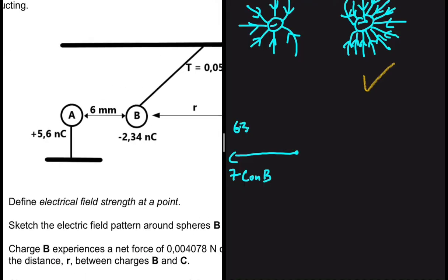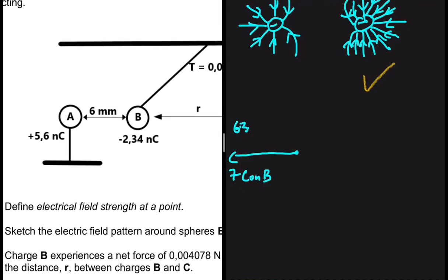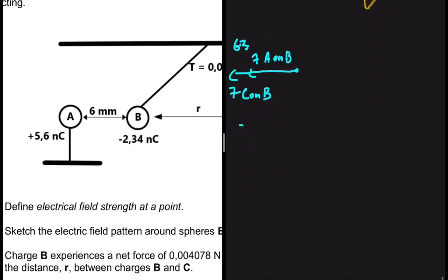Now let's look at B and A. B is negatively charged. A is positively charged. So A will be attracting B to the left. So again we have F of A on B. So all our forces are pointing to the left. That is to say that the F net on B will be equal to F A on B plus F C on B.